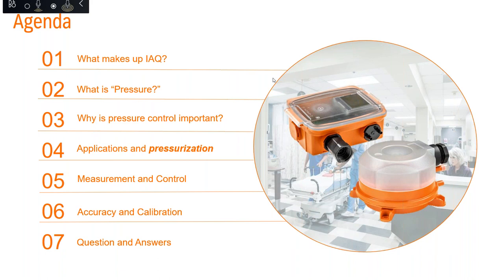From there, we'll jump into what exactly is pressure, and I'll relate that to HVAC and building automation systems. Then we'll jump into the importance behind pressure control — why it's important to use pressure sensors and monitor pressures within our applications and zones. I'll give some specific application examples that use net positive or net negative pressure, cover control principles, and finish up with the importance of accuracy and calibration. As Ron said, we'll also finish with a question and answer session.